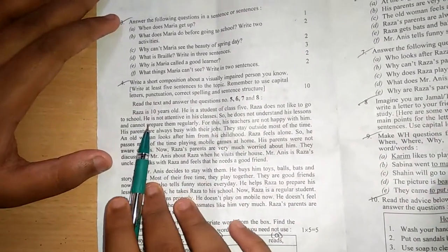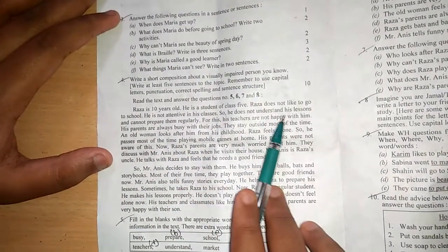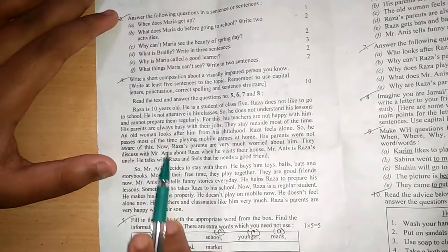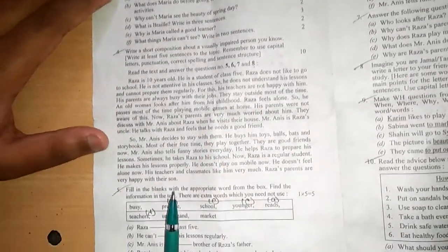Write a short composition about a visually impaired person you know. Now in unseen passages, Radha is ten years old, he is a student of class five. Radha does not like to go to school. This is the full passage, an unseen passage, and this is the new one.